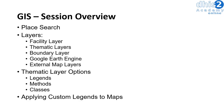This session will be an overview of the GIS application within DHIS2. We will start by demonstrating place search, which allows you to find various locations within the DHIS2 GIS application. We will then demonstrate the use of the facility layer, thematic layers, boundary layers, Google Earth Engine, and external map layers. These layers allow you to add various data types to the map, and we will describe these in much more detail as we go through the session.